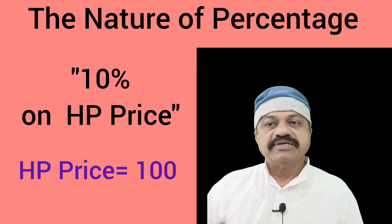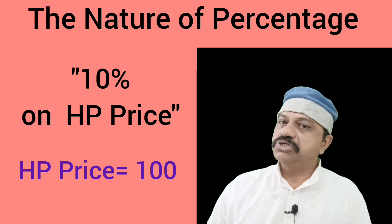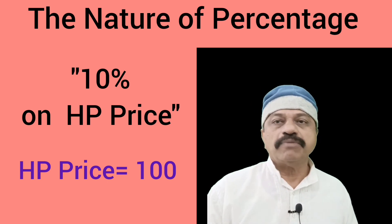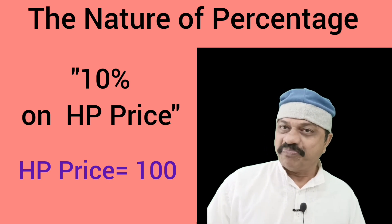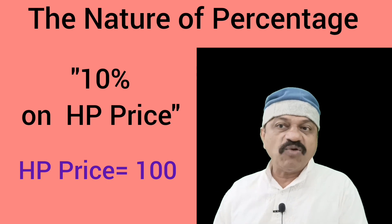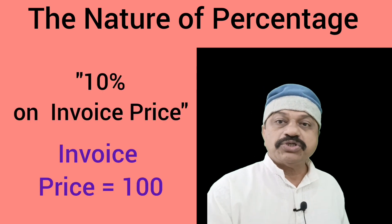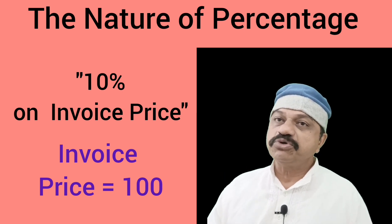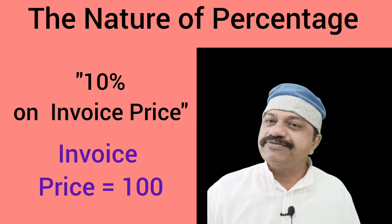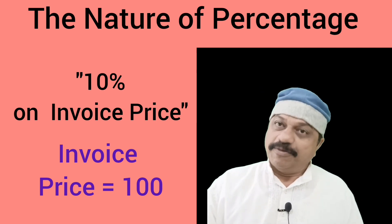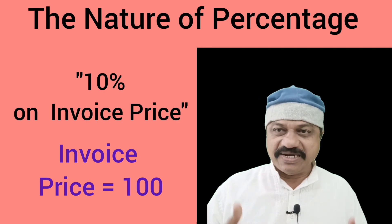Example 8: Goods sold at 10% profit on hire purchase price. Here, 100 stands for hire purchase price. Profit is equal to hire purchase price multiplied by 10 divided by 100. Example 9: Goods sold at 10% profit on invoice price. Here, 100 stands for invoice price. That is, profit is equal to invoice price multiplied by 10 divided by 100.